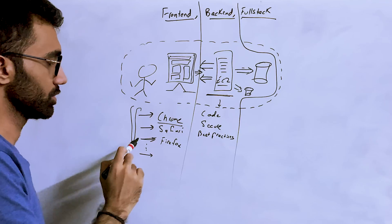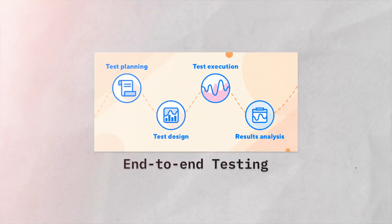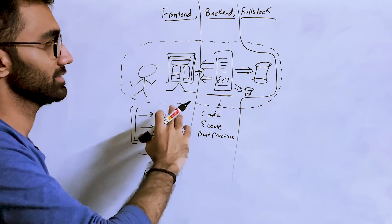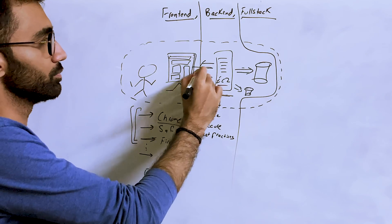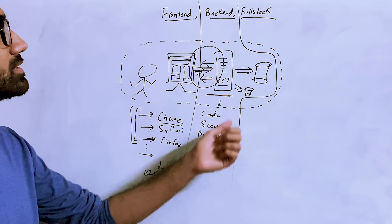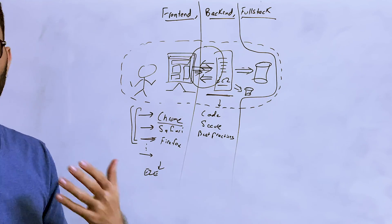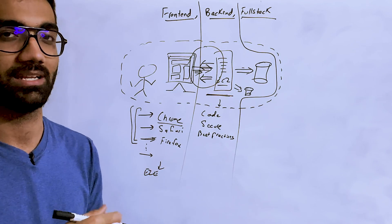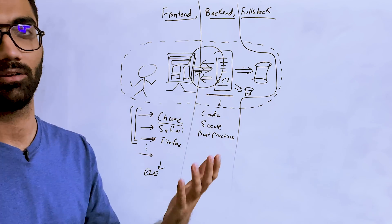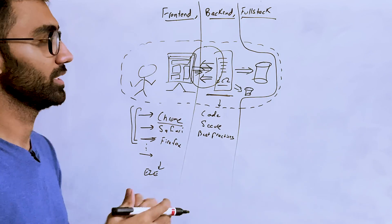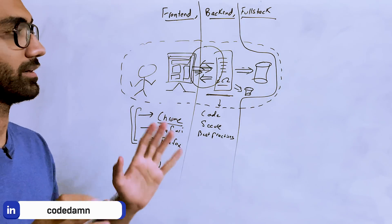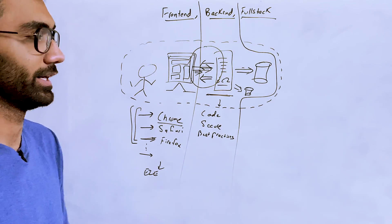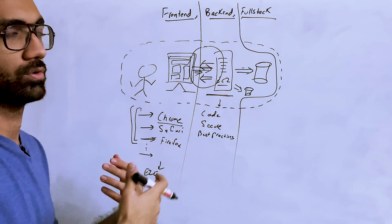A full stack developer knows things like how caching works with Redis, which features break in specific browsers, and that end-to-end testing is done with Playwright. You know a lot about both sides and understand the bridge of communication between them. Front-end developers often don't know what an API, a WebSocket, a TLS handshake upgrade, or event streams are — and that's fine for them. Similarly, back-end developers often don't know how React works or how to write CSS properly. But a full stack developer needs to know all of these aspects.